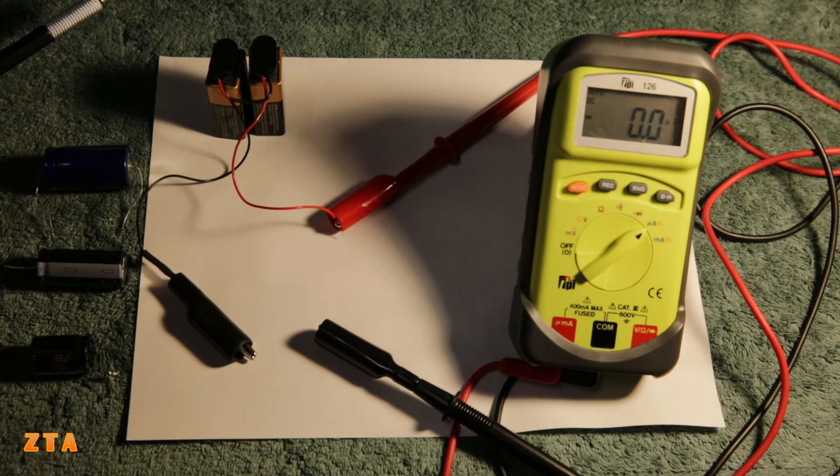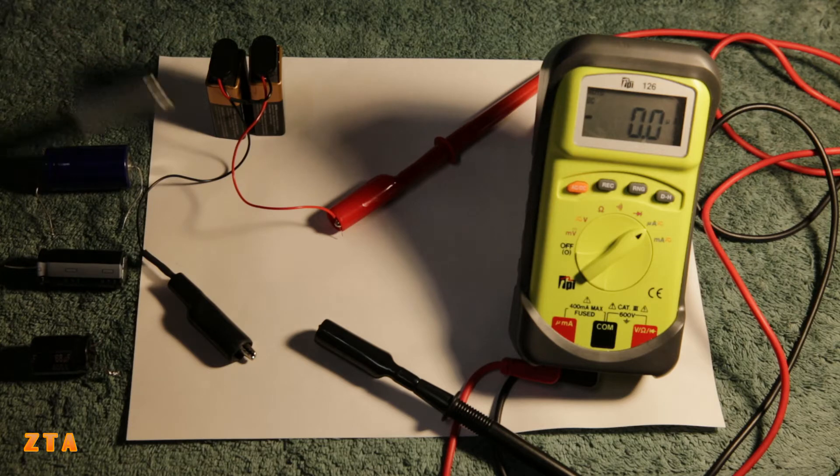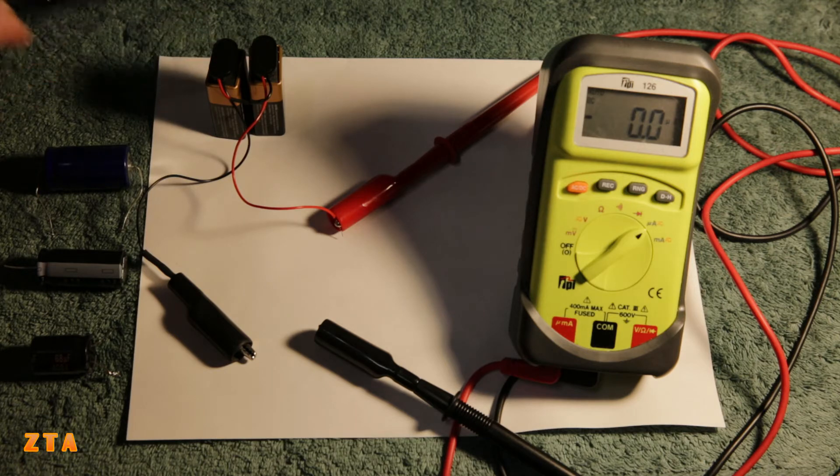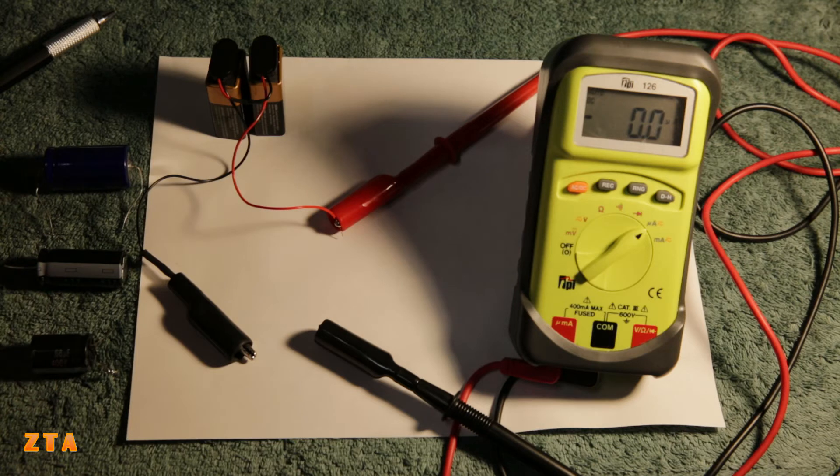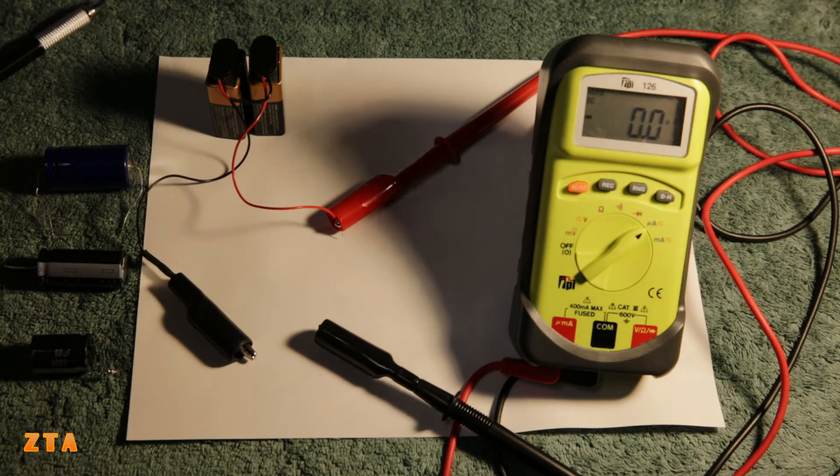The way we know a capacitor is leaky is if there is a lot of amperage going through it, then it means that the internal resistance is lower than it should be. We need to put some voltage across it to measure that amperage. You can't just use the ohmmeter on the meter itself because voltage has to be applied for that resistance to show current going through.